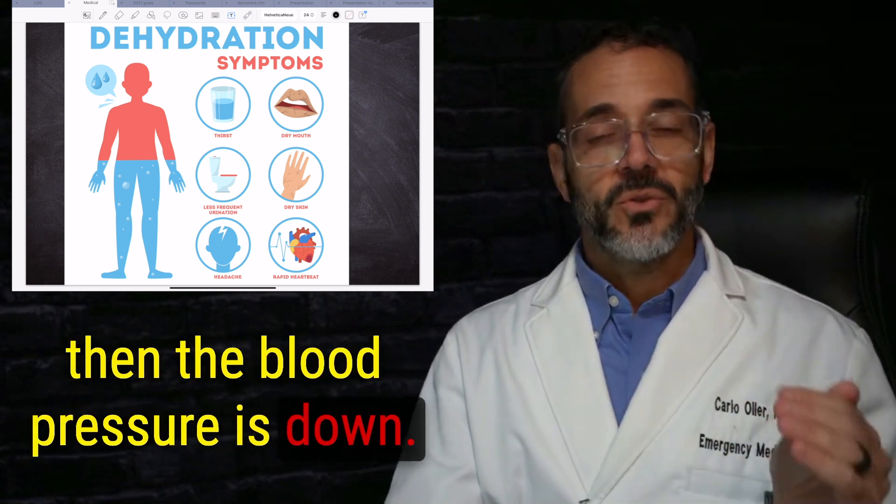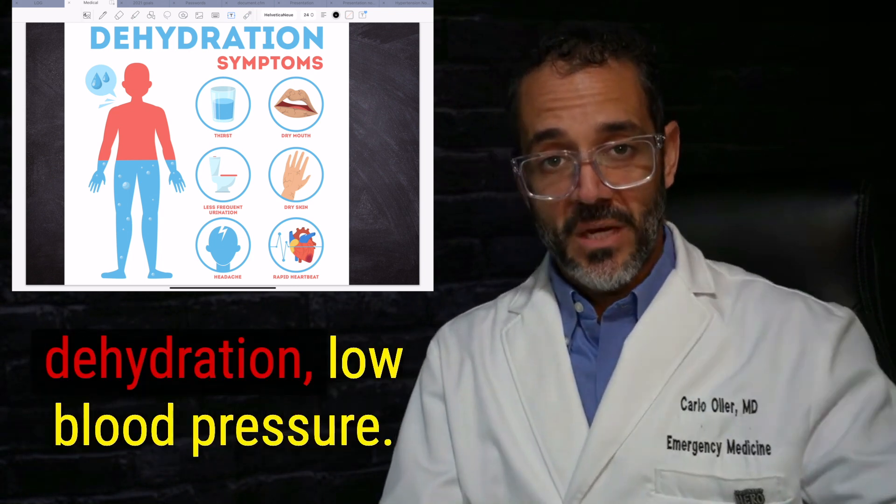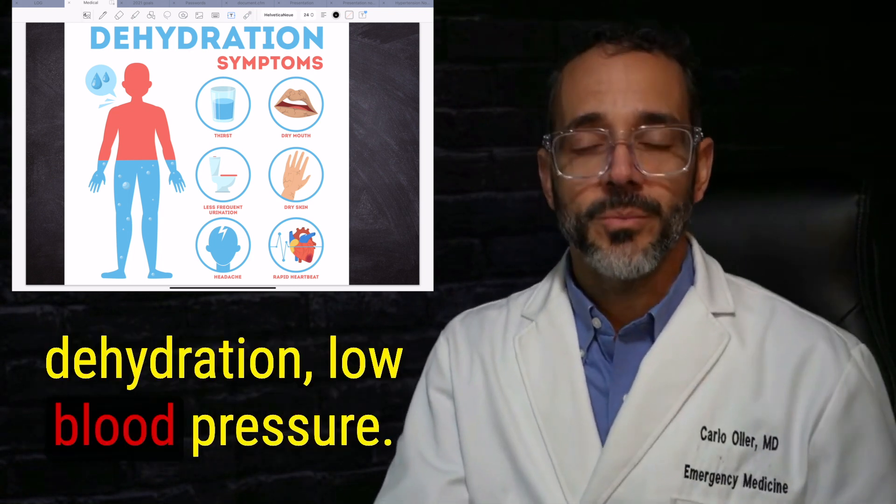But when you are very dehydrated, your blood pressure will be down because the intravascular volume is way too low, and then the blood pressure is down. So initially, a little bit of elevated blood pressure from mild dehydration, but then severe dehydration, low blood pressure.